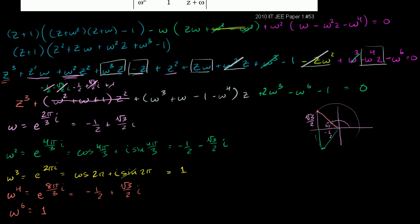For the z coefficient: ω³ = 1, plus ω = −1/2 + (√3/2)i, minus 1, minus ω⁴. But ω⁴ equals omega, so omega minus omega cancels, and 1 minus 1 cancels. This also equals 0.